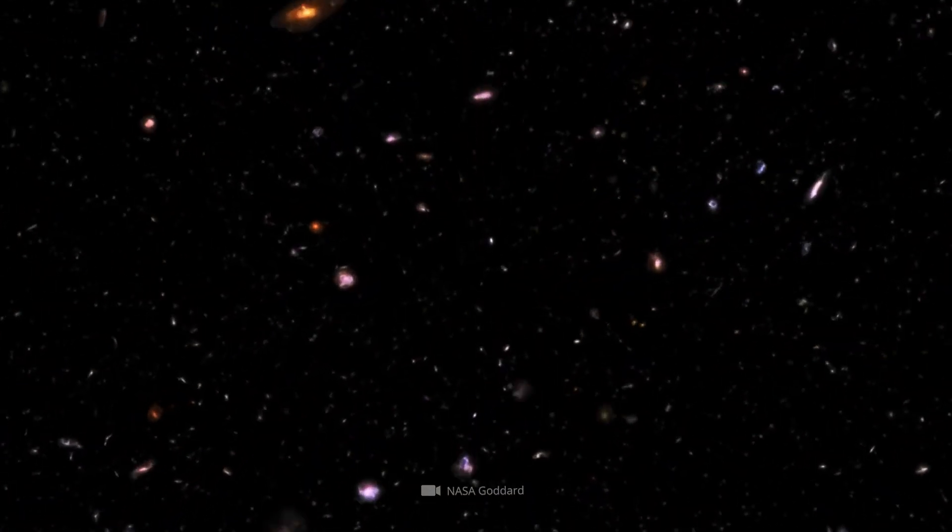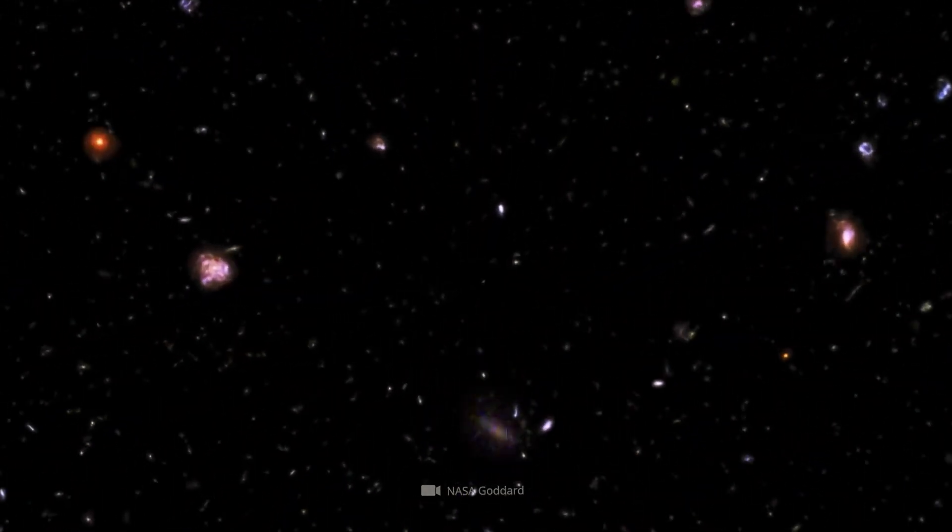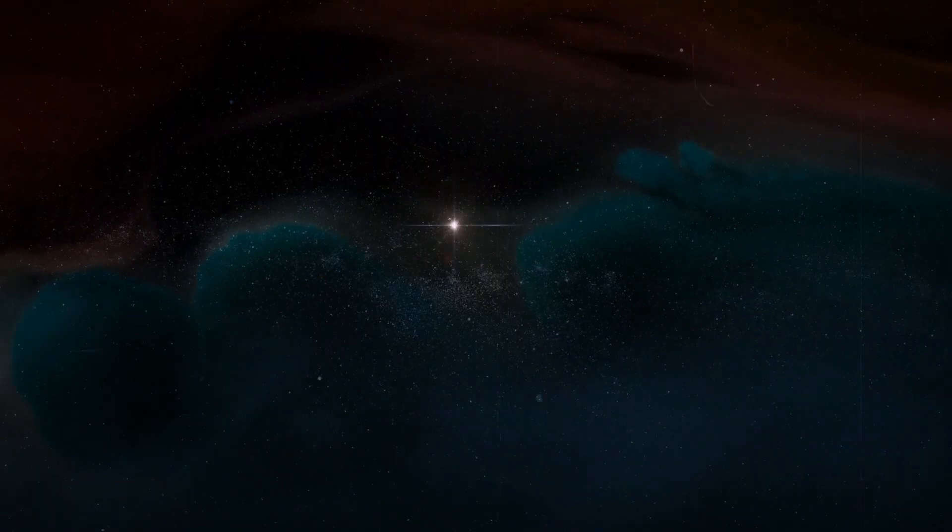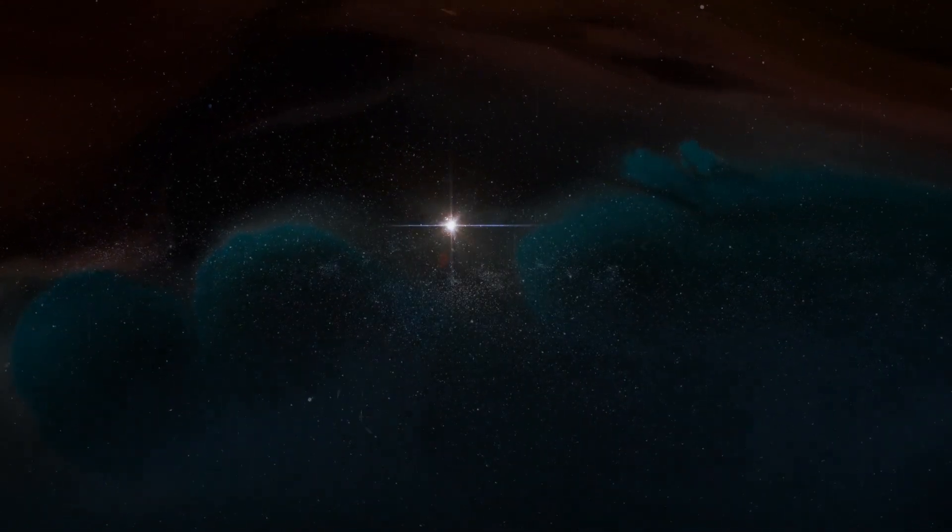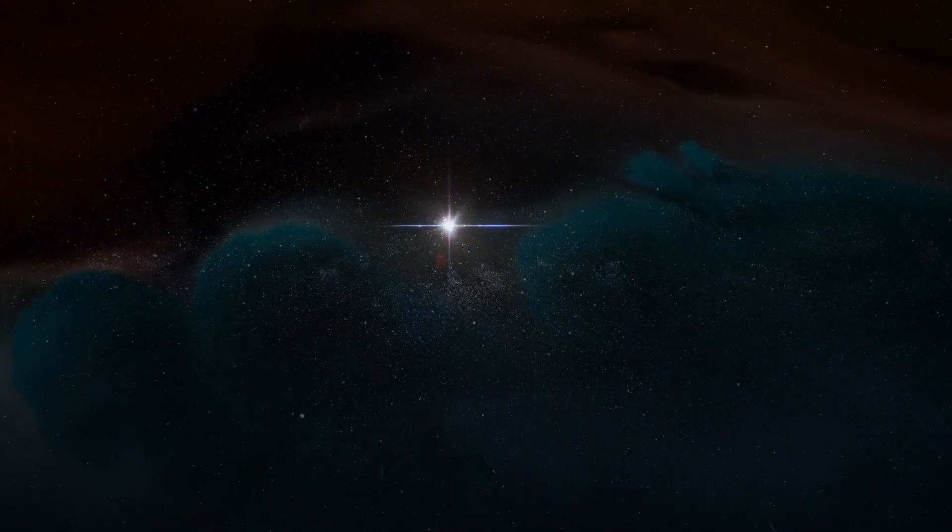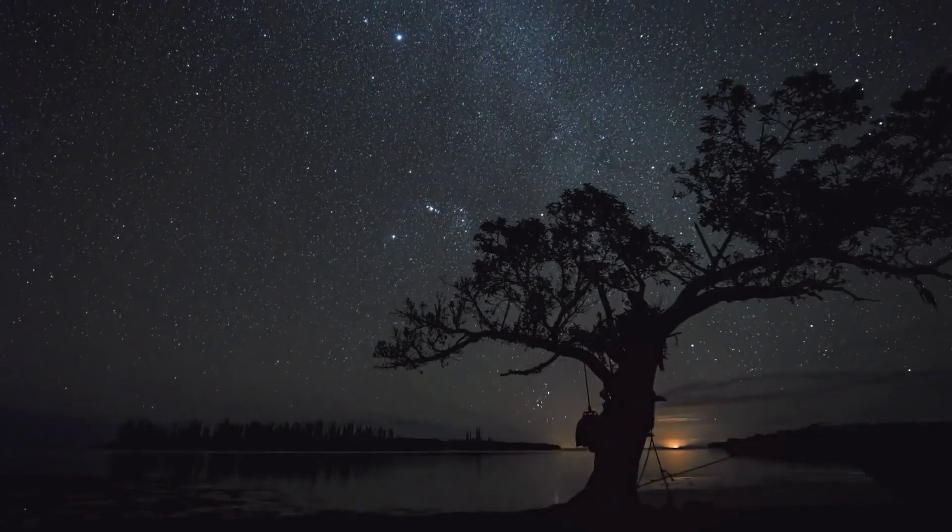Now imagine the time it would take to travel to the next star system, Alpha Centauri. Even if something were traveling at the same speed as the Voyager probe, 38,000 miles per hour, it would take a staggering 70,000 years to reach Alpha Centauri.